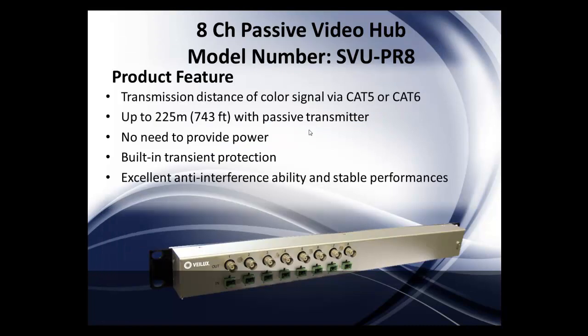The 8-channel passive hub, model number SVU-PR8, transmits color signal via Cat5 or Cat6 up to 225 meters — 743 feet — with a passive transmitter. No need to provide power. Built-in transient protection, excellent anti-interference ability, and stable performance.